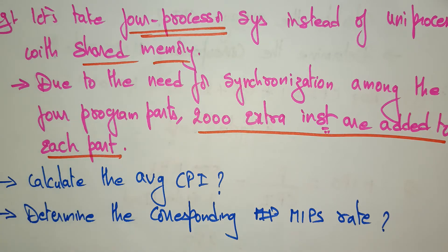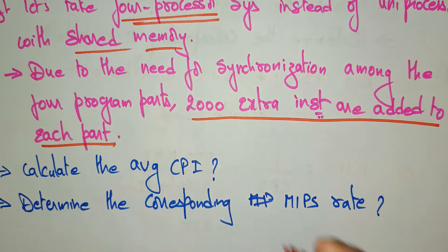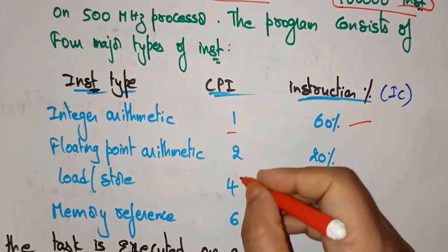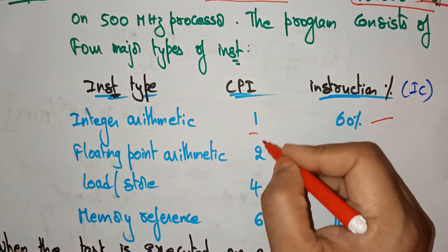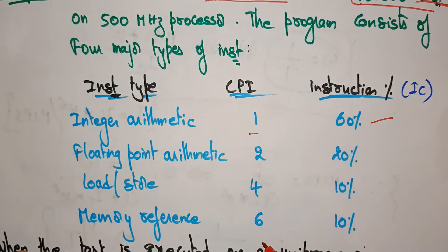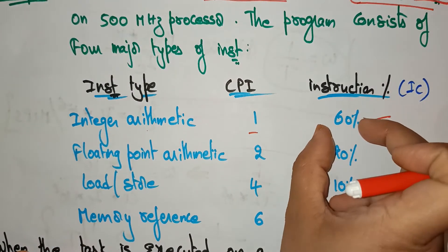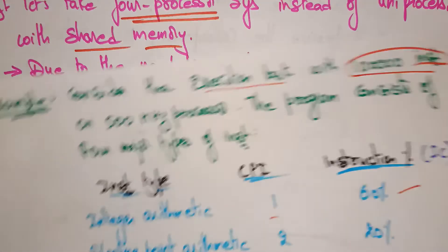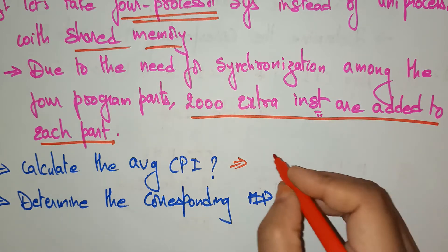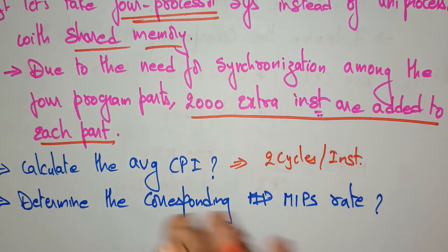By adding this modification, I need to calculate the average CPI. The average CPI is calculated the same way as before — the cycles per instruction are 1, 2, 4, and 6 for each type, with integer arithmetic occupying 60%, and the remaining types at 20%, 10%, and 10% respectively. So the average CPI is 2 cycles per instruction, with no change here.